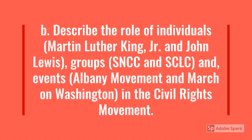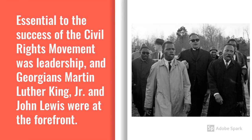In Standard B, we described the role of individuals such as Martin Luther King Jr. and John Lewis, groups such as the SNCC and SCLC, and events such as the Albany Movement and March on Washington in the Civil Rights Movement. Essential to the success of the Civil Rights Movement was leadership, and Georgians Martin Luther King Jr. and John Lewis were at the forefront. Martin Luther King Jr.'s work and devotion to nonviolent protest earned him the Nobel Peace Prize and led to the national holiday created in his honor.